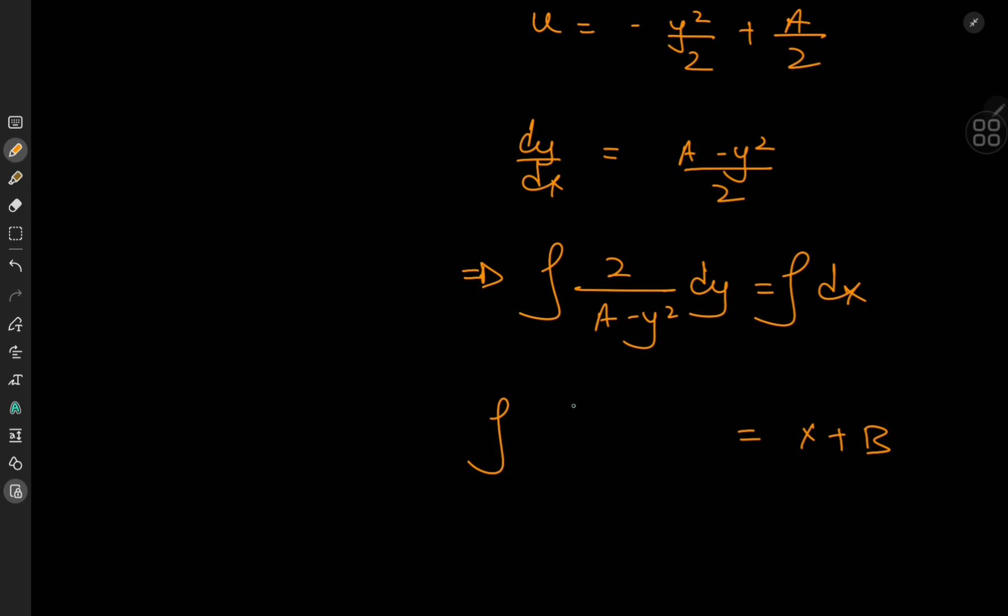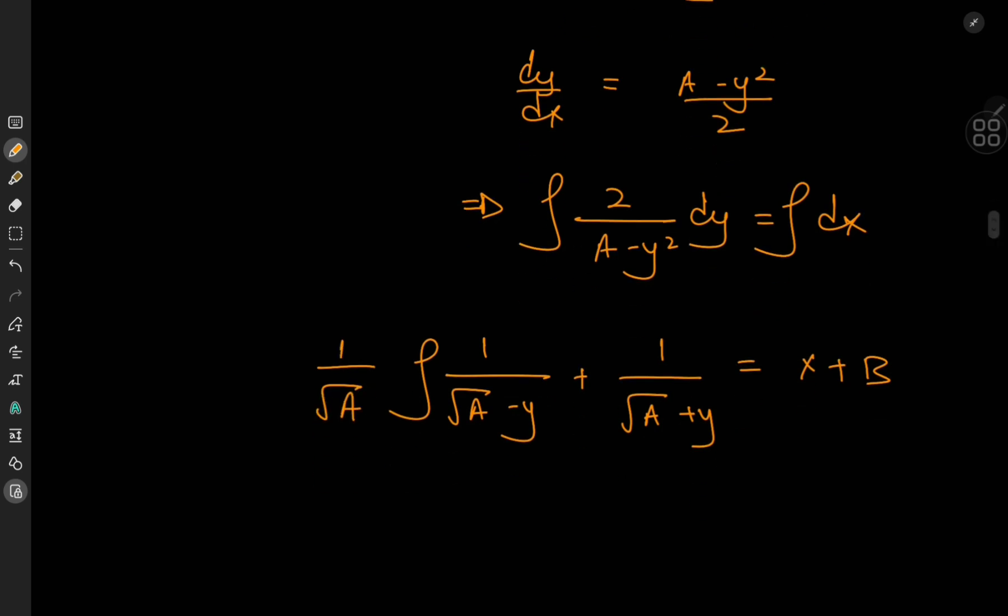Whereas on the left, we could use a partial fraction decomposition here. And that would give me one factor of root a minus y plus something divided by root a plus y. Now with a plus sign in between, we have the y's canceling out, and in the numerator we would get two times root a. But we know we only need a factor of two, so to balance that out, I just need ones here and the reciprocal of root a outside.